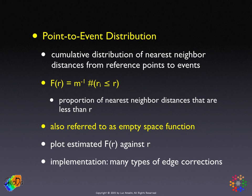Because it is constructed from reference points, this function is also referred to as the empty space function. As for the G function, you plot the estimated function against r, and we'll be interested in figuring out what is the functional form of this F function under complete spatial randomness.